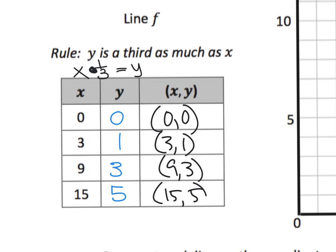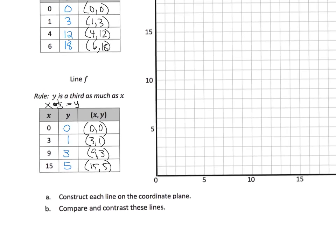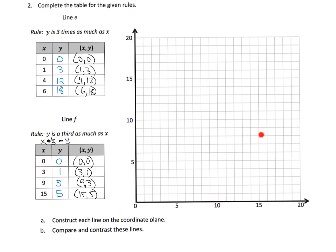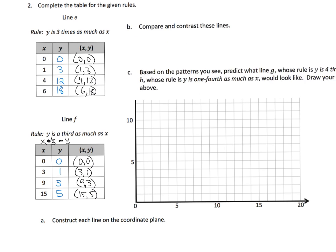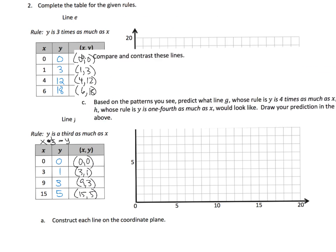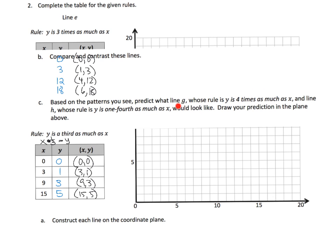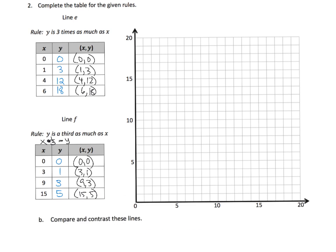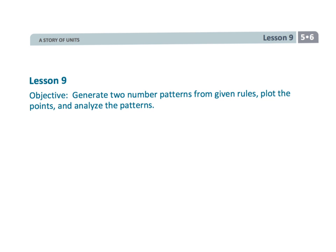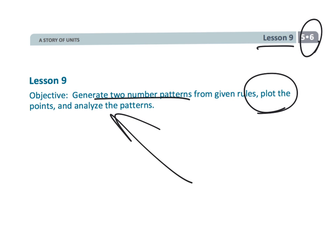Parents and teachers should guide students to graph both lines and compare how they look, then make predictions about what other lines with similar rules might look like. It's not a big deal if students' predictions are wrong — this is all laying the foundation for a deep understanding of sixth grade ratios. That wraps up fifth grade module six lesson nine: looking at patterns, plotting them, and comparing and contrasting.